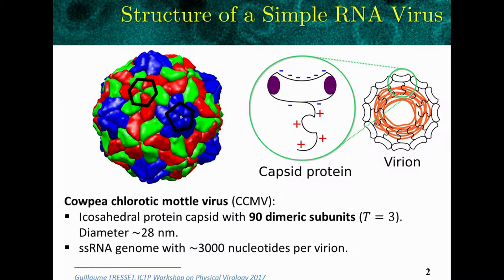So you have actually two types of interaction: the protein-protein interaction, which is controlled by this hydrophobic interaction — attractive — and the electrostatic repulsion, which is controlled by the pH; and the subunit-genome interaction, which is controlled by the flexible arm, which is cationic.